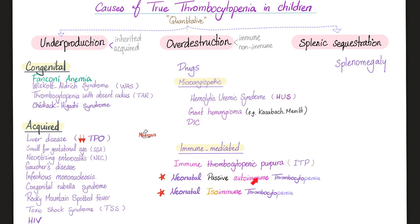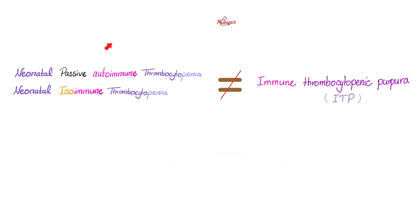Neonatal immune thrombocytopenia is not the same as ITP (immune thrombocytopenic purpura). These two are in different categories. Neonatal immune thrombocytopenia is more likely to happen in a fetus or neonate — just before or just after birth. ITP can happen in young children like 2-, 3-, or 7-year-olds, or even adults aged 20, 30, or 50. Neonatal immune thrombocytopenia is caused by antibodies from the mother crossing the placenta and destroying the baby's platelets. ITP is usually triggered by a viral infection, where the body's own antibodies attack its own platelets — not the mother's antibodies.